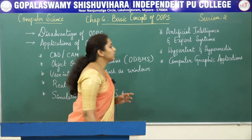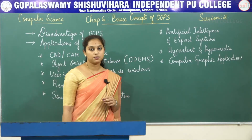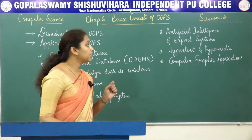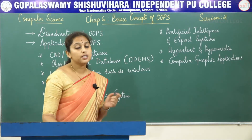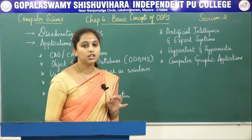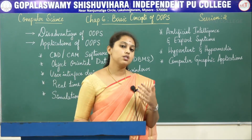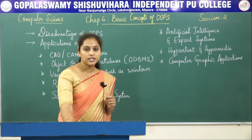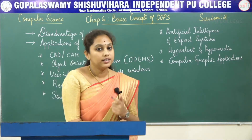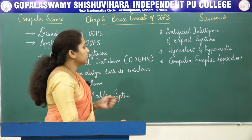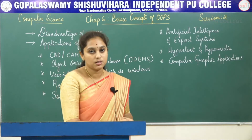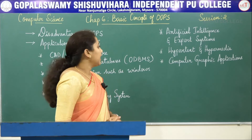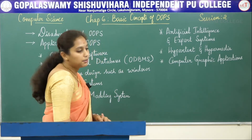The next application is artificial intelligence and expert systems. These are computer applications built to solve complex problems in a particular domain, which is far beyond the human brain. They provide characteristics like reliability, high responsiveness, understandability, and high performance.